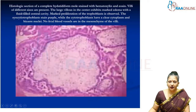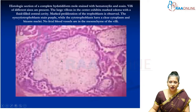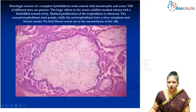This is a histological section of a complete hydatidiform mole stained with hematoxylin and eosin. It shows tertiary stem villi from the trophoblast and chorionic stem villi. The large villus spaces in the center exhibit marked edema with a fluid-filled central cavity and marked proliferation of trophoblastic cells. The syncytiotrophoblasts stain purple while the cytotrophoblasts have a clear cytoplasm and a bizarre nucleus. No fetal blood vessels are seen in these tertiary stem villi which have undergone degeneration.